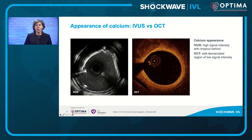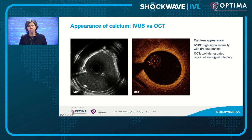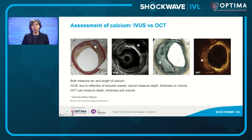Looking at how the appearance of calcium compares between IVUS and OCT: in the IVUS image, calcium appears as a high signal intensity white appearance with dropout behind it, whereas in OCT you see a low signal intensity, well-demarcated area in the vessel wall. Both IVUS and OCT allow you to measure the arc and length of calcium, but IVUS — because of reflection of acoustic waves — can't give a quantitative measure of depth, thickness, or volume. OCT allows you to measure depth, thickness, and therefore volume of calcium, because you can see both edges of the well-demarcated area.